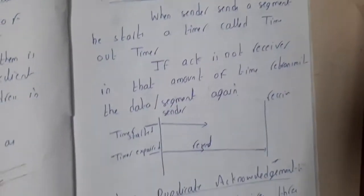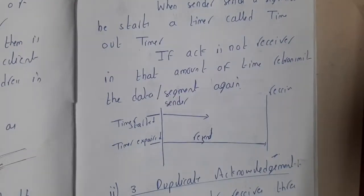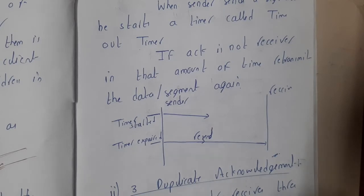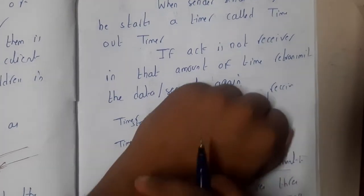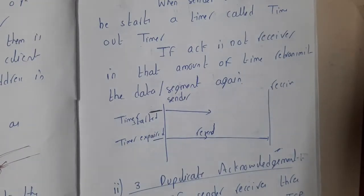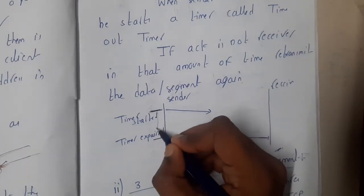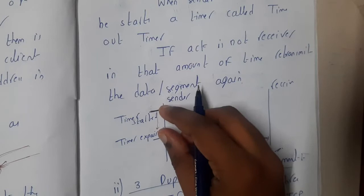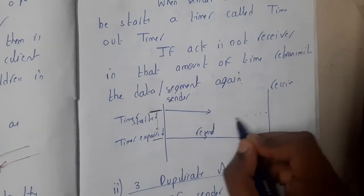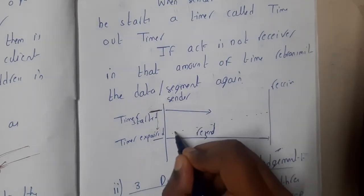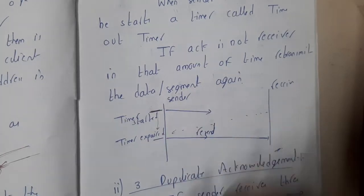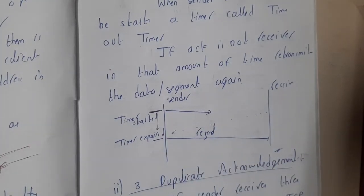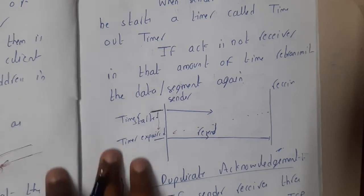For the timeout timer — as we've already discussed — when a sender sends a particular file, it starts a timer. This timer represents the maximum time the sender will wait for an acknowledgement. If the acknowledgement is not received within that time, the sender resends the packet. This is the timeout timer concept.